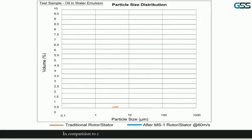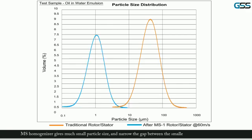In comparison to conventional rotor stator high shear homogenizers, the MS homogenizer gives much smaller particle size and narrows the gap between the smallest and largest particle size.